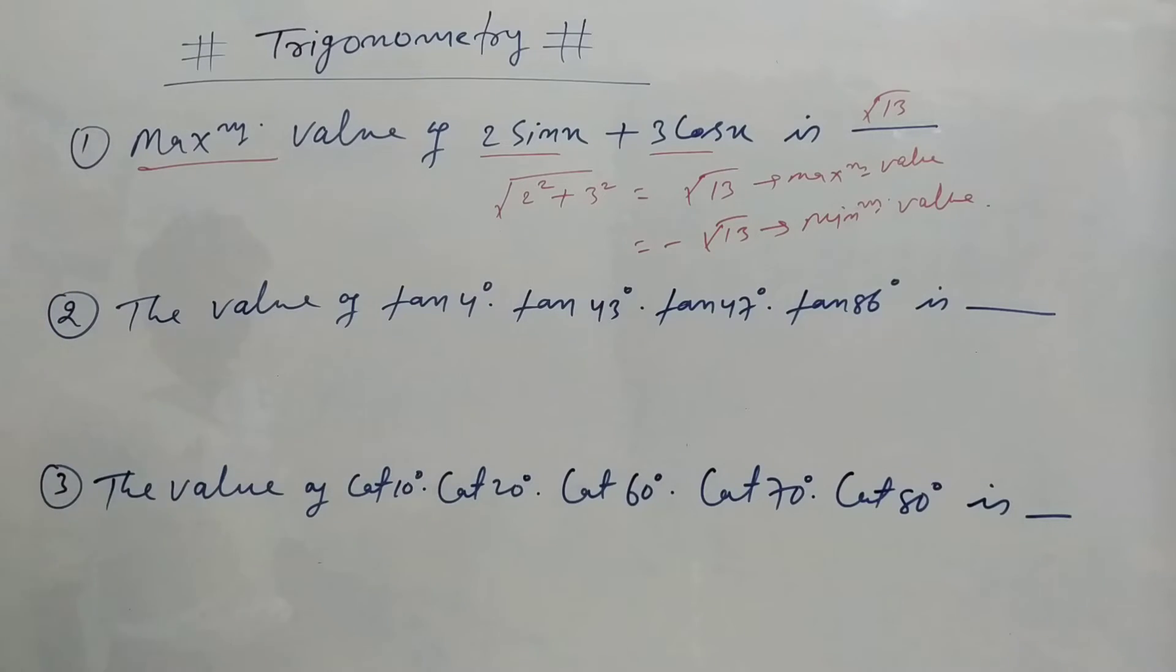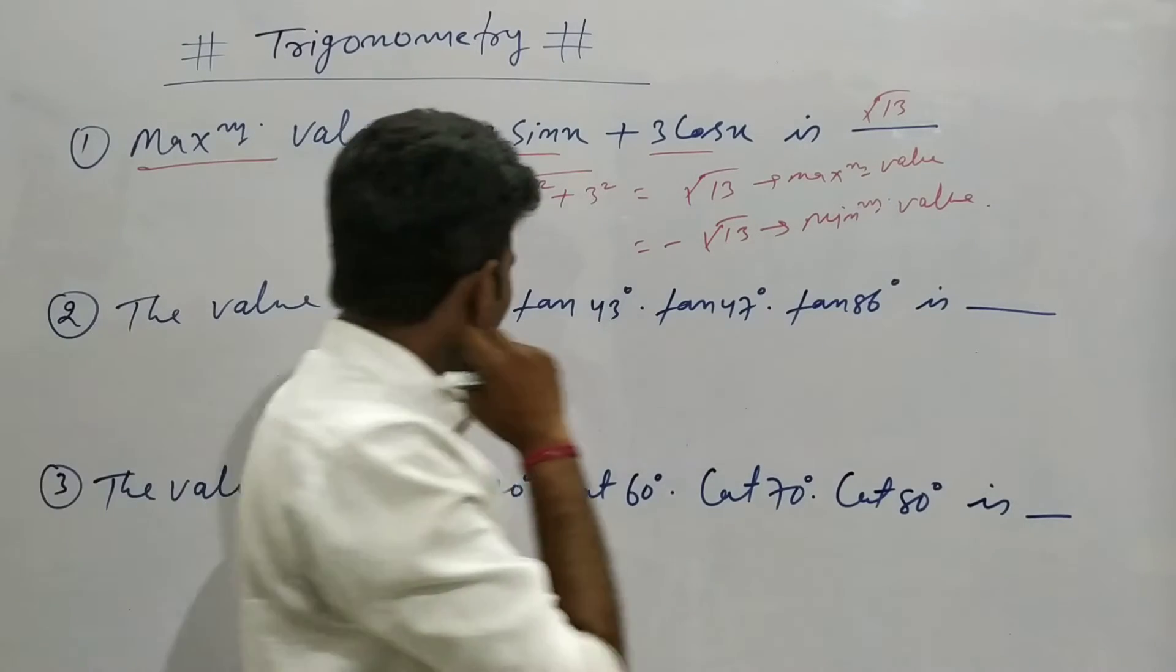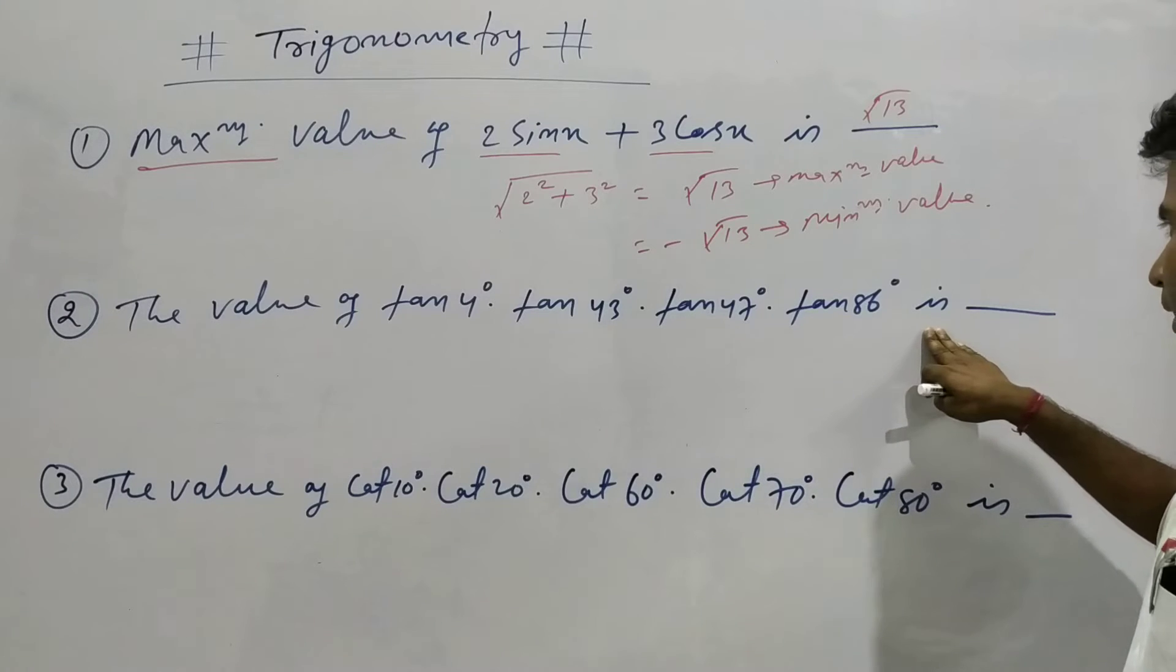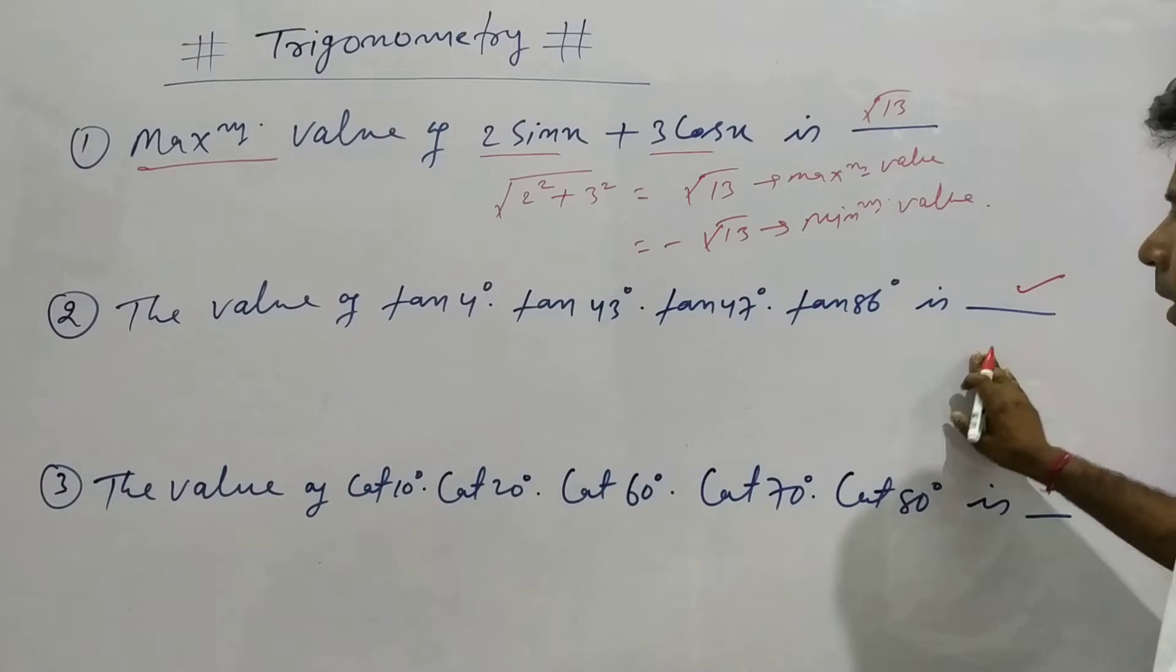The second question: find the value of tan4° × tan43° × tan47° × tan86°. What is this value?